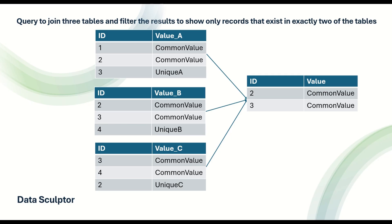Greetings everyone, welcome back to my channel Data Sculptor. Today we are going to see another interesting SQL interview question. The question is: you have three tables — Table A, Table B and Table C — and you need to join those three tables and filter the results to show only records that exist in exactly two of the tables.